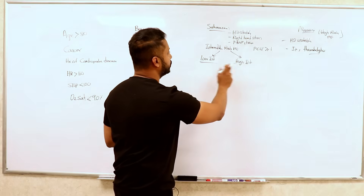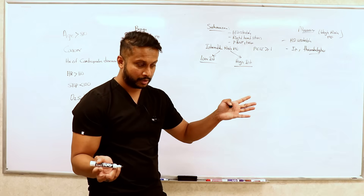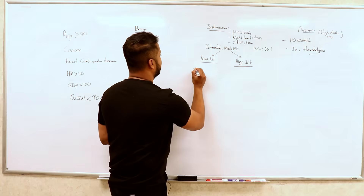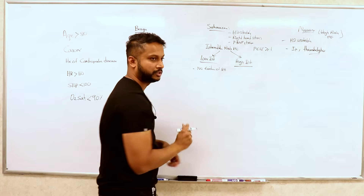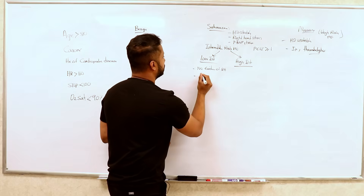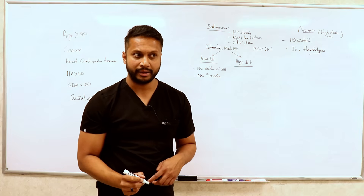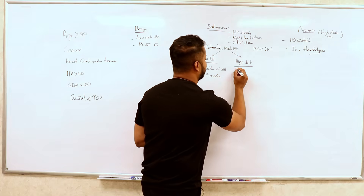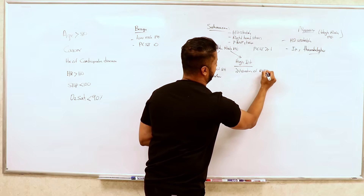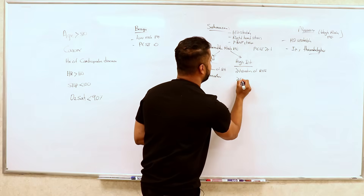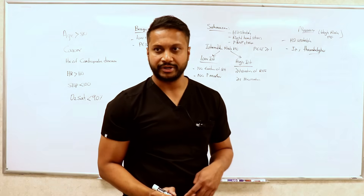To differentiate low intermediate from high intermediate, you ask two important questions: Is there evidence of right heart strain on imaging? Are there elevated markers such as troponin and BNP? For low intermediate: no evidence of right heart strain on imaging and no elevated markers. For high intermediate: at least one or more evidence of right heart strain, or at least one elevated biomarker.